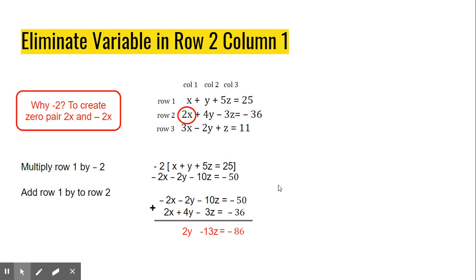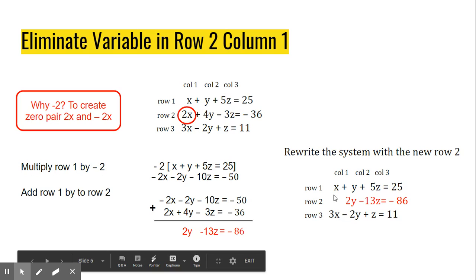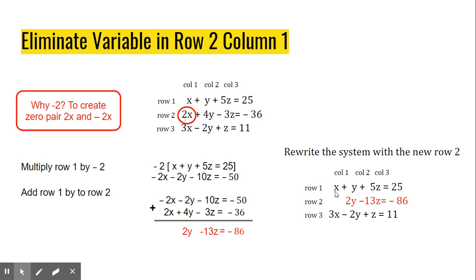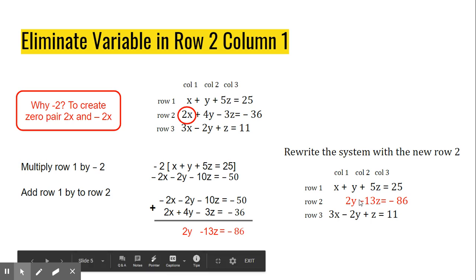Now, last thing I'm going to do is rewrite my system with my new Row 2. I have a new Row 2. And notice that the variable in this position has been eliminated. I did not change Row 1. I was just using that as a tool to get rid of this variable. So Row 1 remains the original. Row 3 remains the original. What has changed is Row 2.